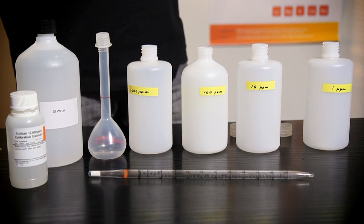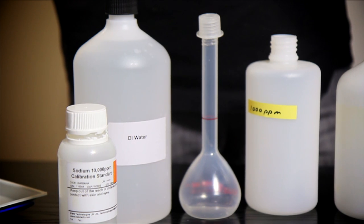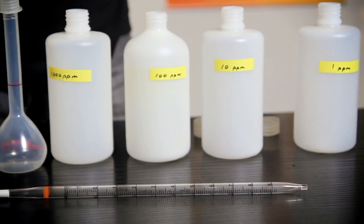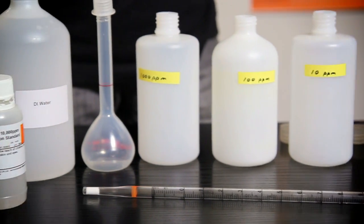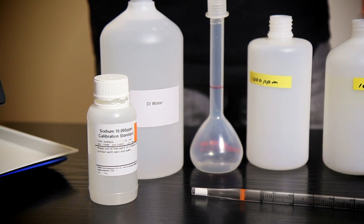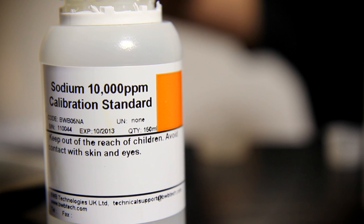For this exercise you will need four labeled beakers, the 100 ml volumetric flask provided with your BWB XP, a 10 ml pipette also provided with your BWB XP, and ion standards. The ion standard we are using for this tutorial is the 10,000 ppm sodium standard.